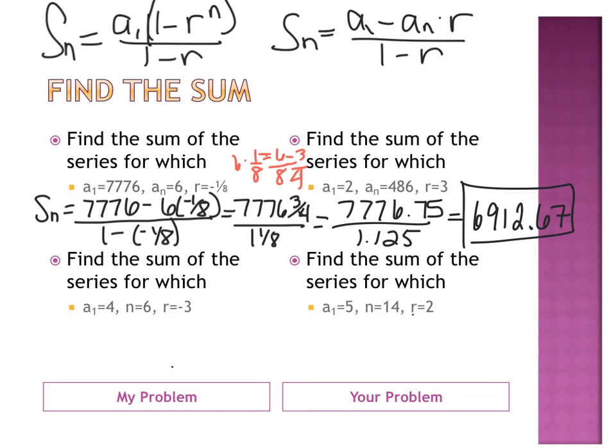So, take a second, and try the second problem on the right. You're doing this problem here. A1 is 2, An is 486, and R is 3. Use the formula to find the sum of that series. Okay, so we should have got 728.